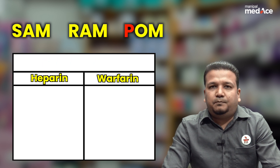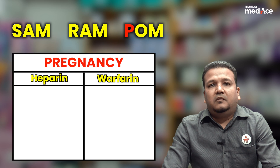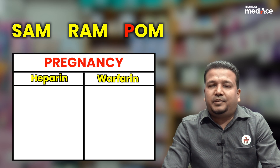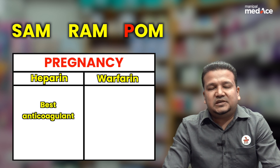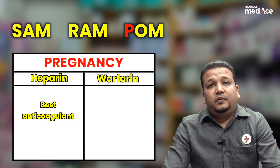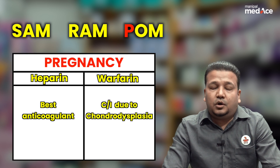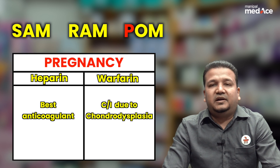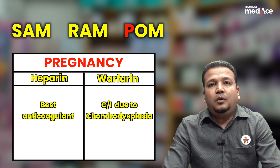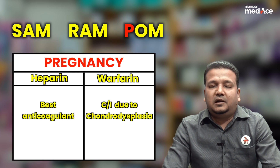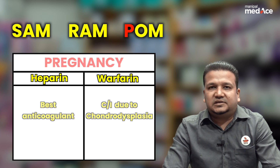P stands for pregnancy. Heparin is the safest and the best anticoagulant in pregnancy, whereas warfarin is contraindicated in pregnancy because it causes cartilage defects leading to chondrodysplasia punctata in the fetus.